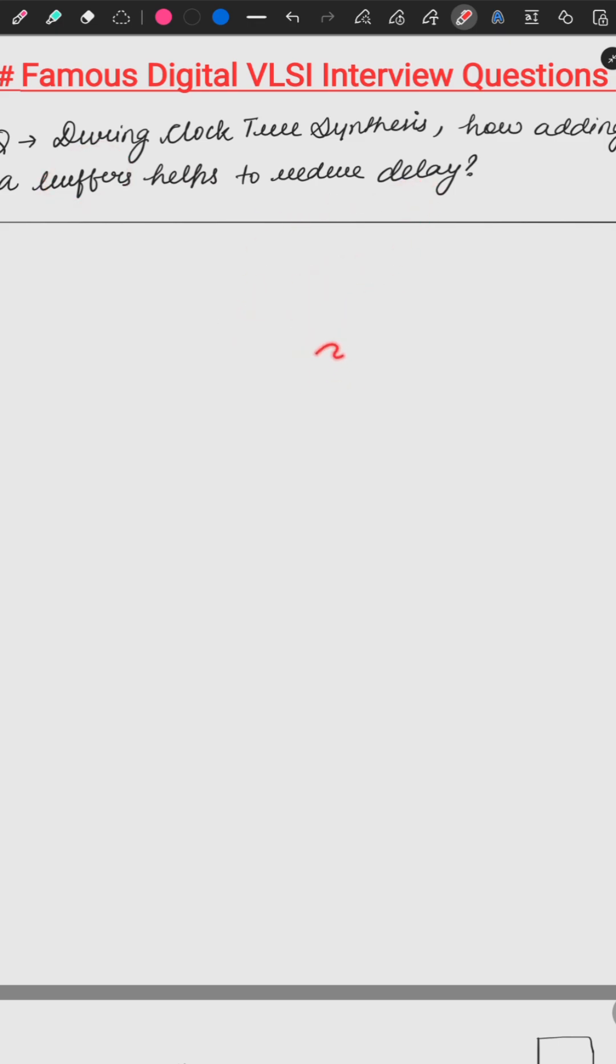When we're doing CTS (clock tree synthesis) before routing, we perform CTS to estimate the real values of delays, transitions, and everything. Then we perform these steps to reduce delay. Now, how is this delay reduced? That's the question, because whenever we add a buffer, it causes an increase in delay. But how does it help us reduce delay during clock tree synthesis in physical design? We'll see in this video.